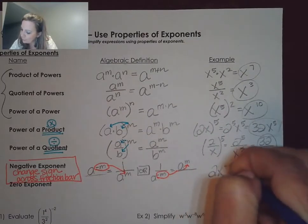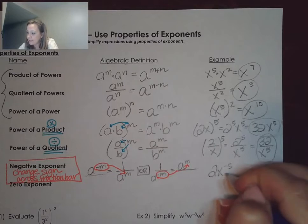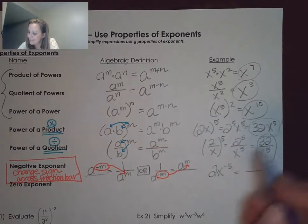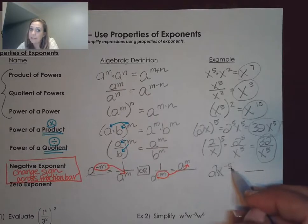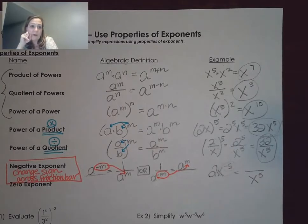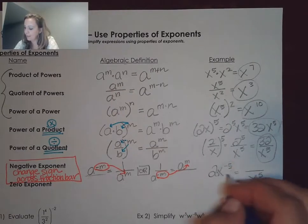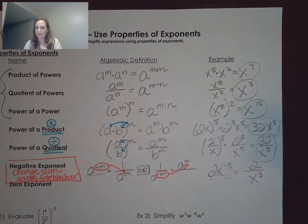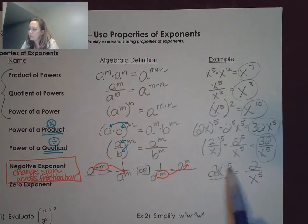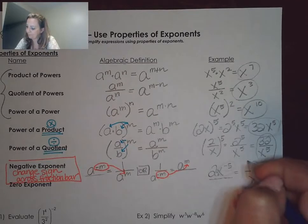If we had something like 2x to the negative fifth, not both of those things are being raised to the negative fifth — because notice, this is like 2 times x to the negative fifth. So what happens is that this negative exponent with its base is going to move across the fraction bar and now the exponent is positive. The 2, however, was not being raised to a negative exponent, so that would stay exactly where it was. You can write anything over 1, so the x to the negative fifth becomes positive when we move it across, and the 2 stays put.